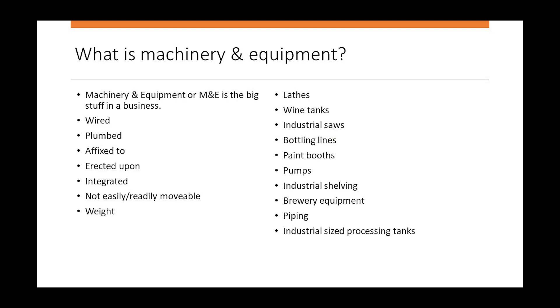The second part is machinery and equipment. Some businesses will also have machinery and equipment — the big things that are erected upon or affixed to the real estate. These things are plumbed or wired in, so big that they may be held in place by their own sheer weight; they are not easily or readily movable. For example, really large wine tanks would be in place — equipment the business needs to operate. So what we've really got is the category of business property, with two subcategories: personal property and machinery and equipment.